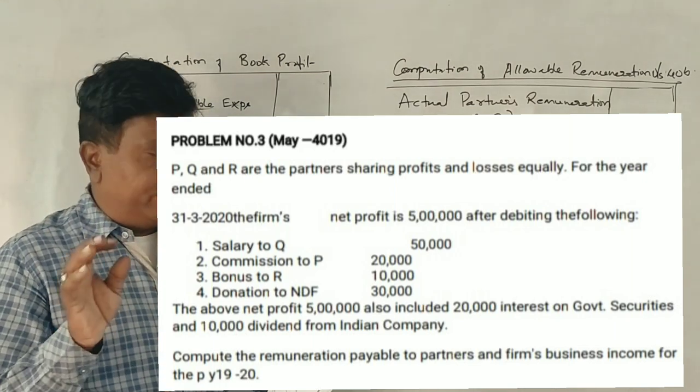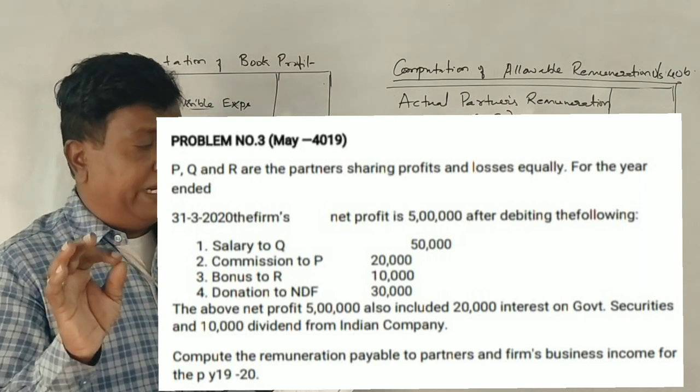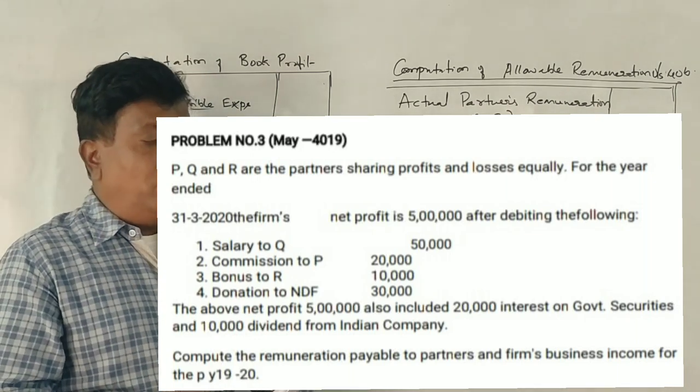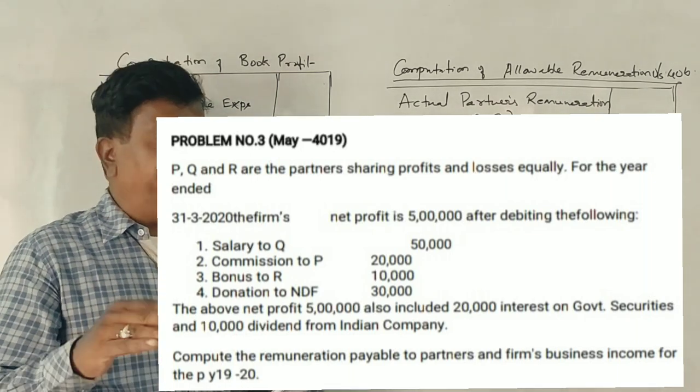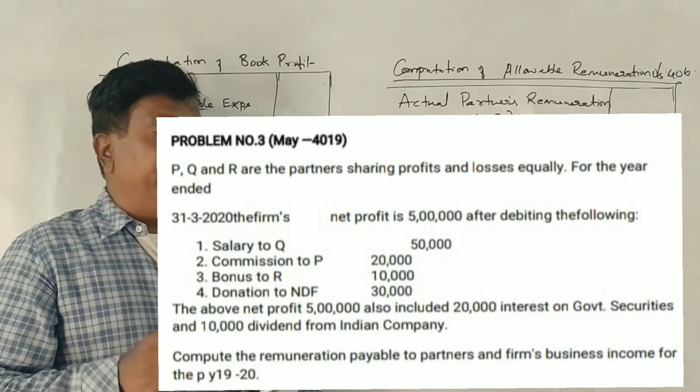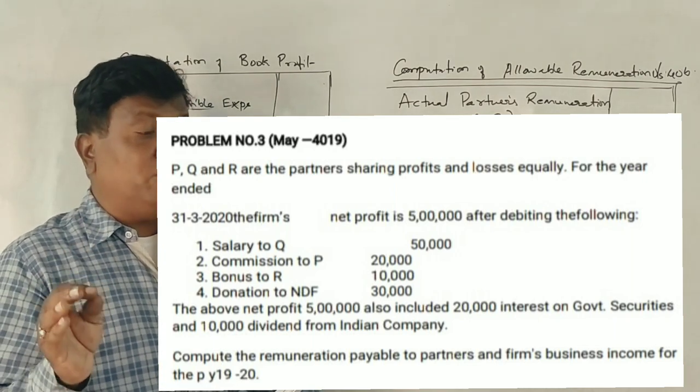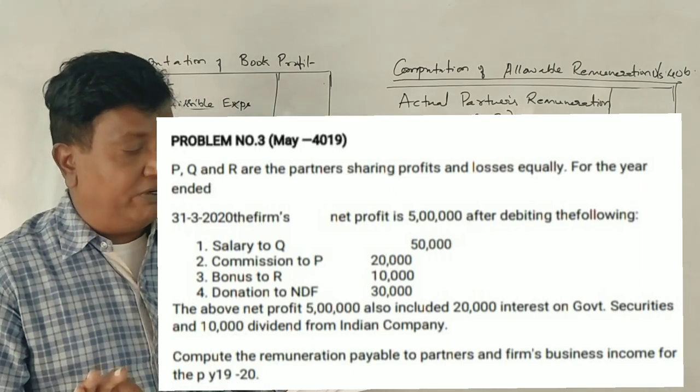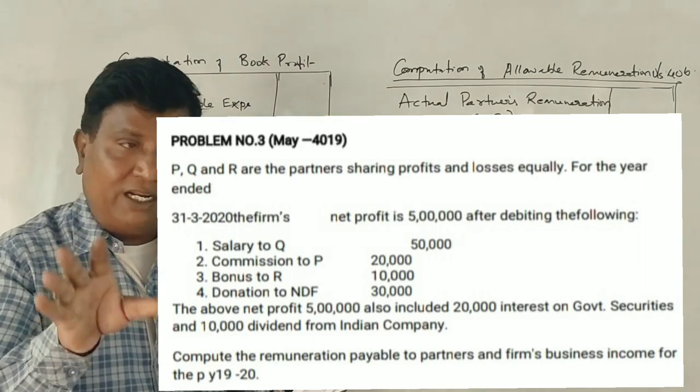Salary to Q, 50,000 rupees. Commission to P, 20,000 rupees. Bonus to R, 10,000. Donation to NDF, 30,000. The above net profit 5 lakh also included 20,000 interest on government securities and 10,000 dividends from Indian company.